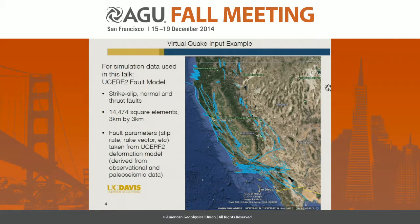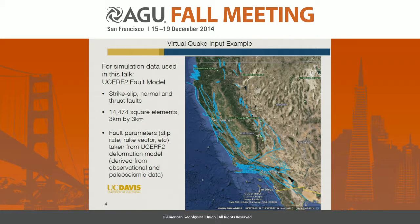For the simulation data I'm going to show later, we ran a 50,000 year simulation of the full California fault model called UCERF2. Most notably, the San Andreas runs up through Southern California. We mesh the faults into three kilometer by three kilometer fault elements, and there are about 14,000 of them in this particular fault model. We took the fault parameters directly from the UCERF2 deformation model, which derives them from observational data and paleoseismic data.